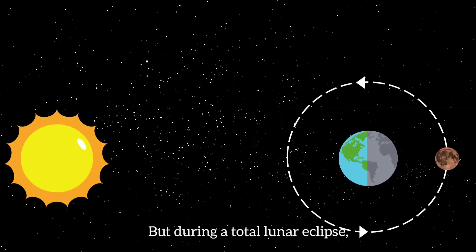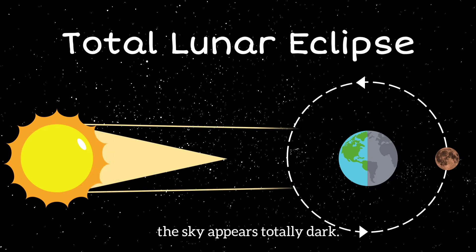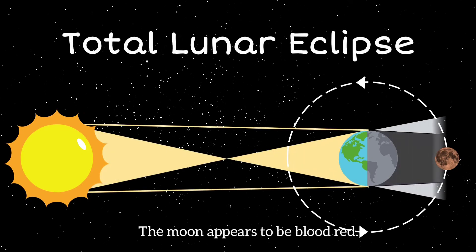But during a total lunar eclipse, the sky appears totally dark. The moon appears to be blood red.